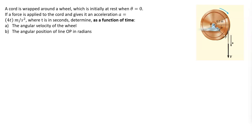If a force is applied to the cord and gives it an acceleration equal to 4t meters per second squared where t is in seconds, determine as a function of time the angular velocity of the wheel and the angular position of the line OP in radians. So here you have a cord - it's got 0.2 meters in radius, it's rotating clockwise.